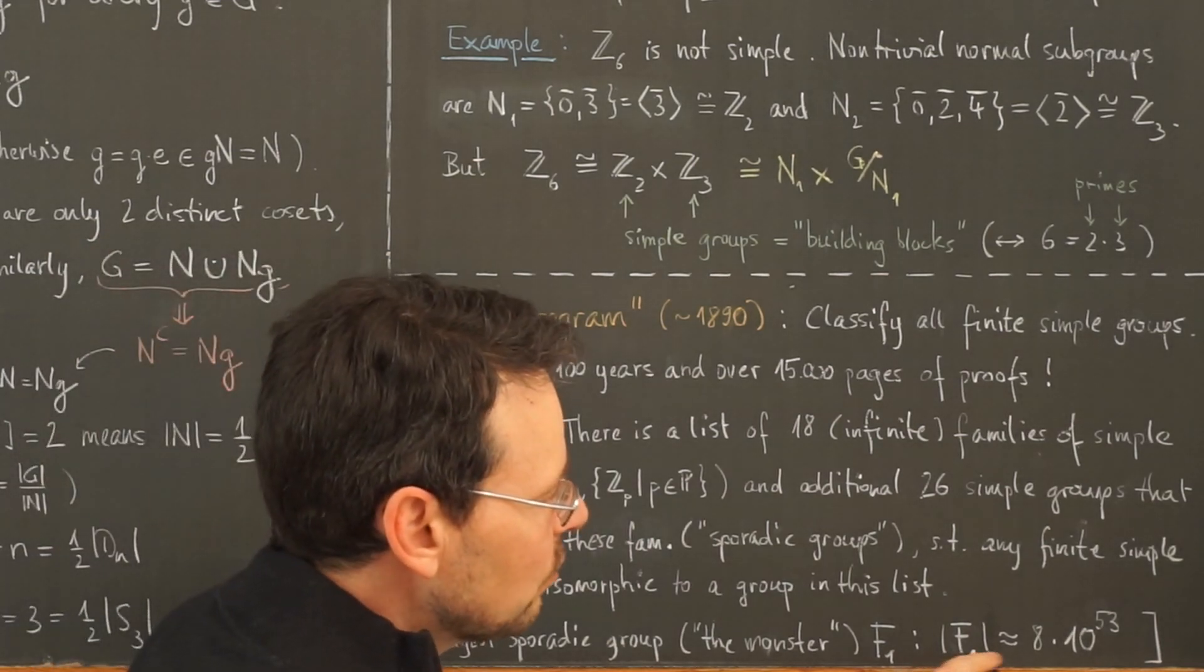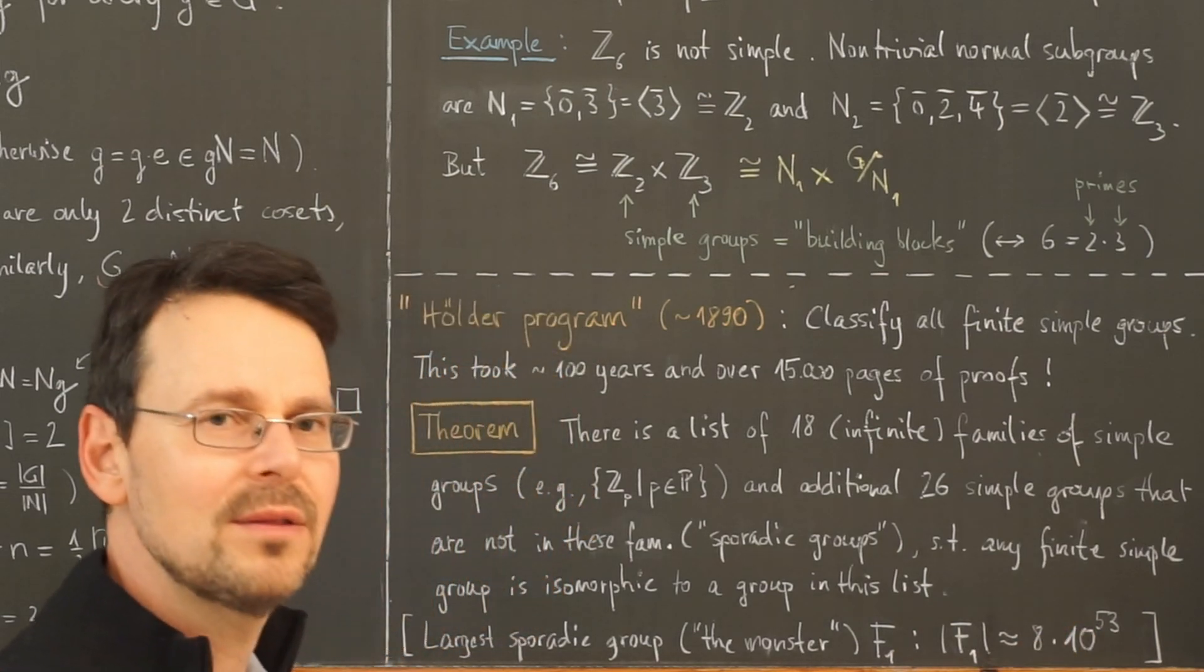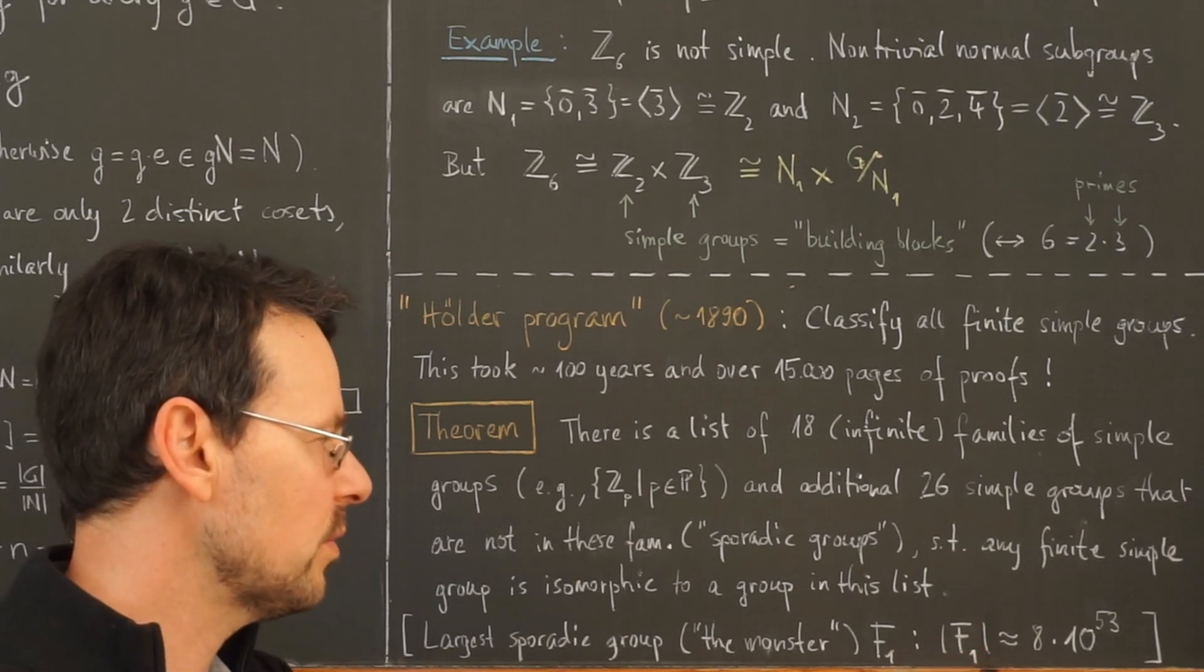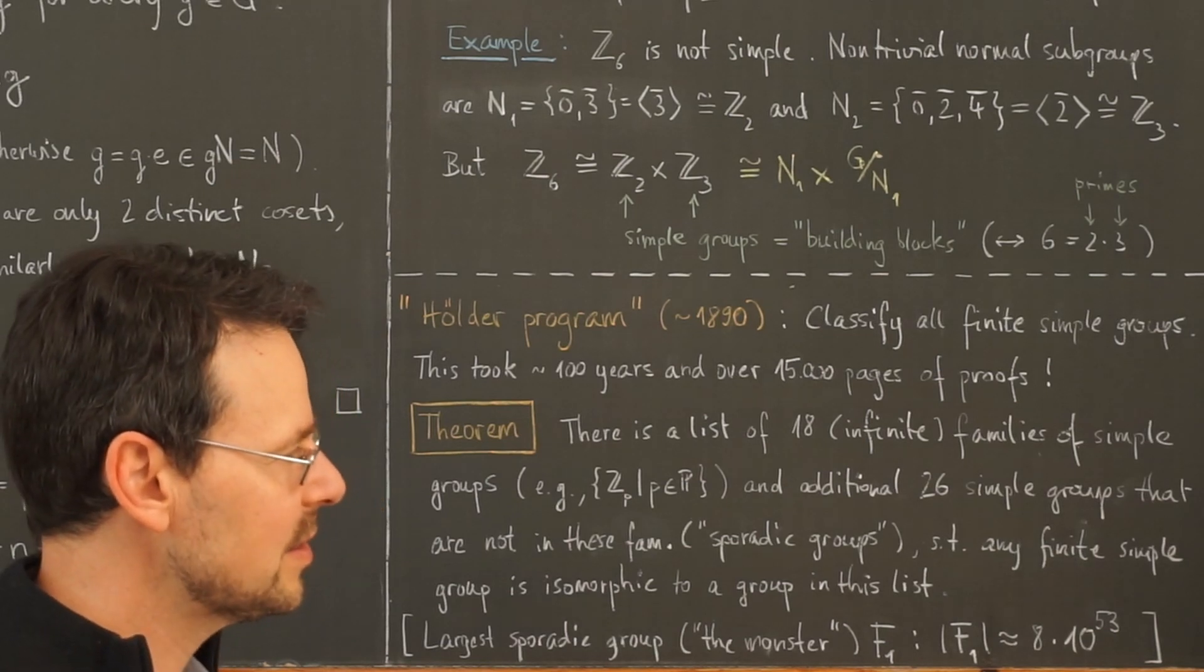And the order of this group is about 8 times 10 to the 53, so a one with 53 zeros. I wouldn't even know how to pronounce this number. And this is the largest simple group.